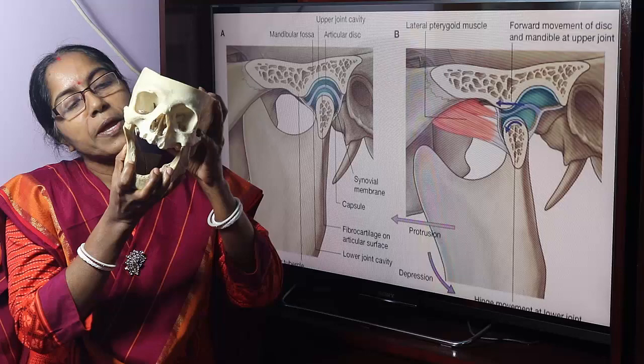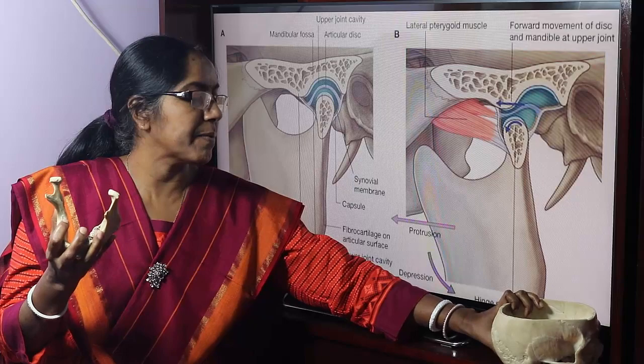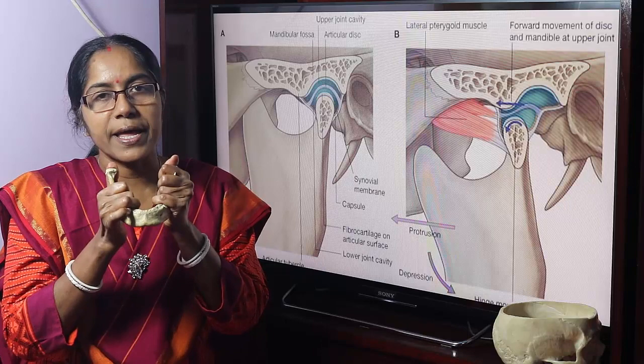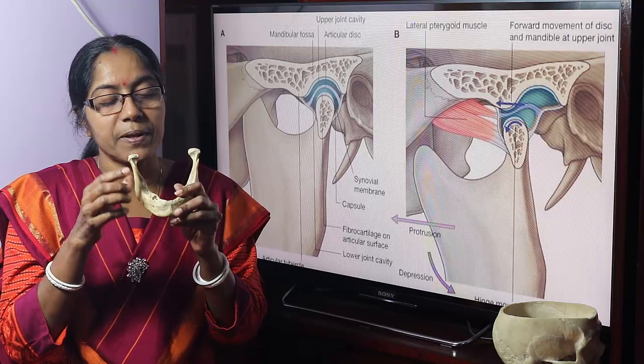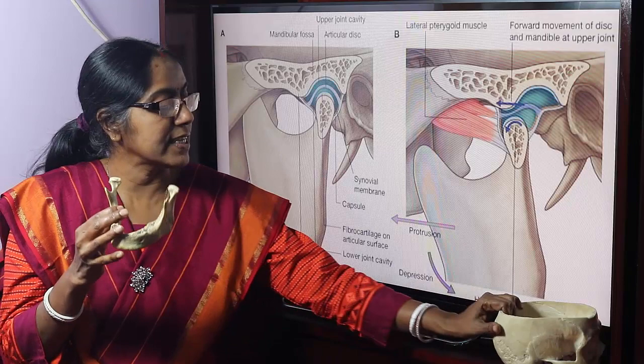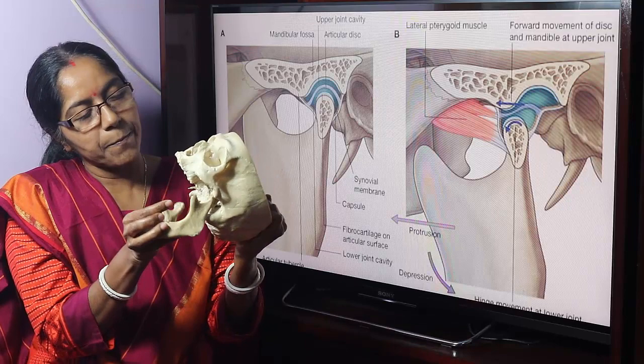The Temporomandibular Joint is a pair of synovial joints. This is the mandible — this is the body and this is the ramus. This is the coronoid process and this is the condylar process. The condylar process is termed the head of the mandible. By these two heads, it articulates with the base of the skull and forms a pair of temporomandibular joints.